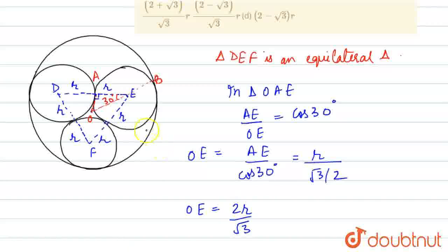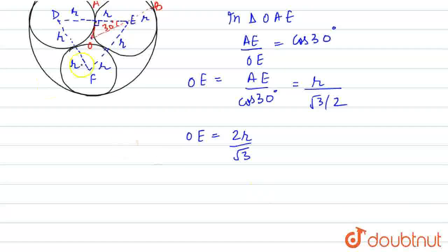Now, we have OE and EB will also equal the radius r. This EB is also equals to r. So OB is the radius for the bigger circle. Therefore, OB equals OE plus EB, which equals 2r by root 3 plus r.